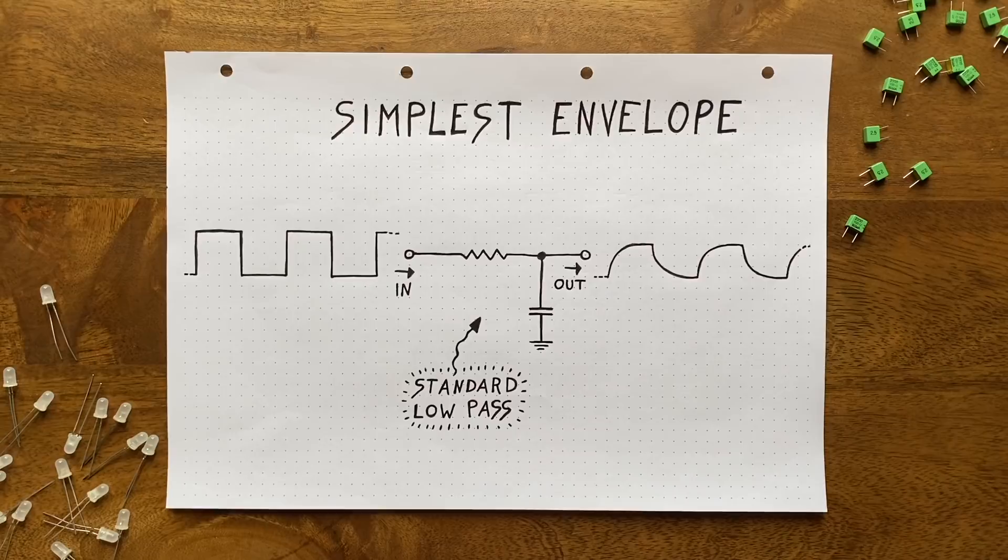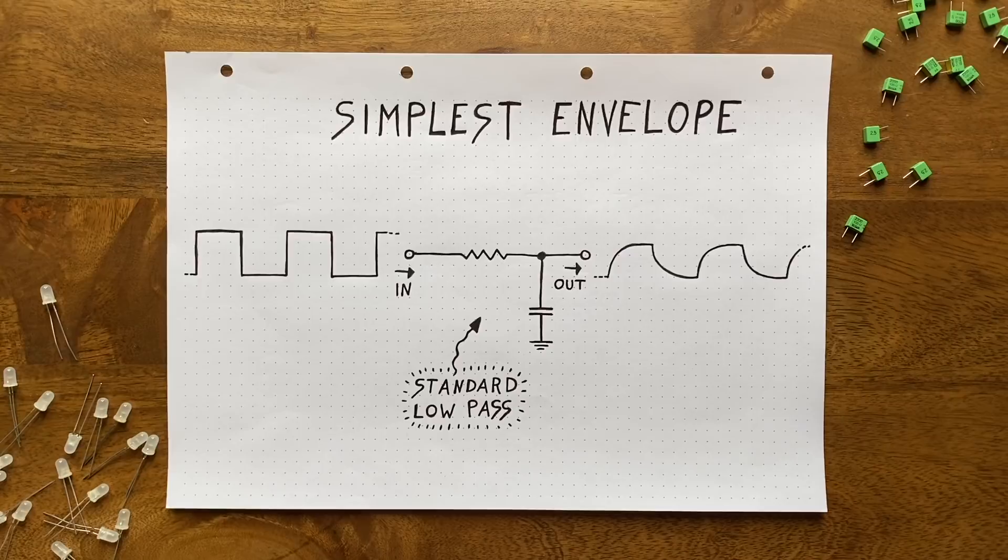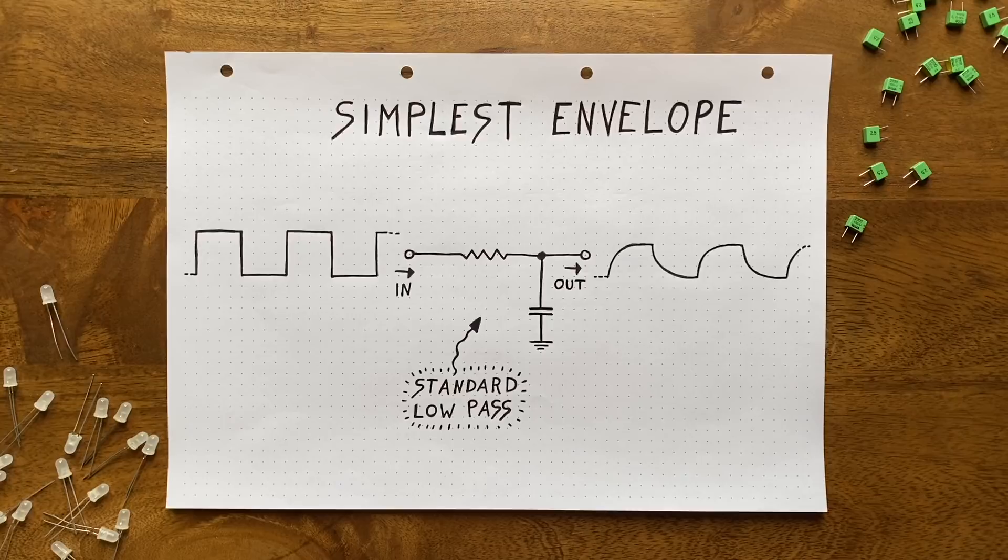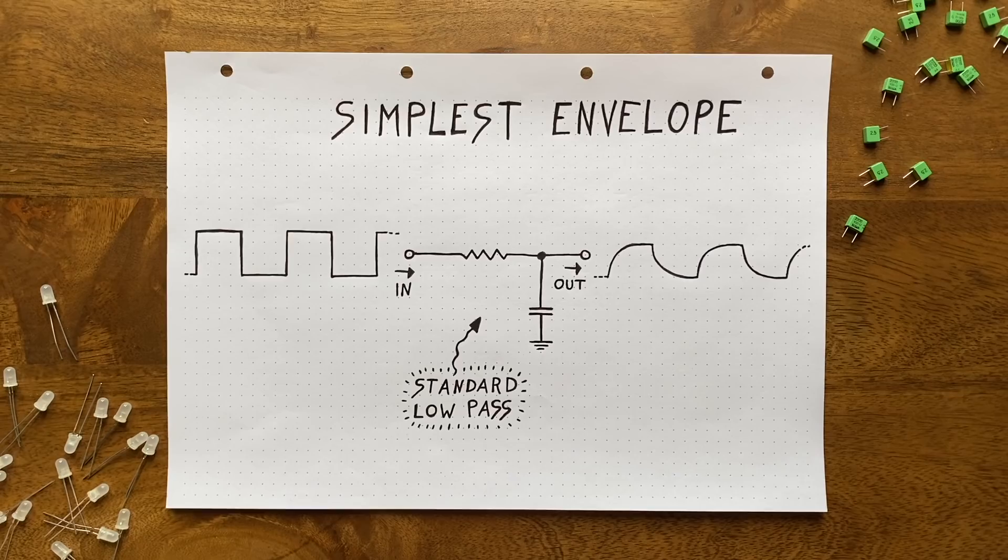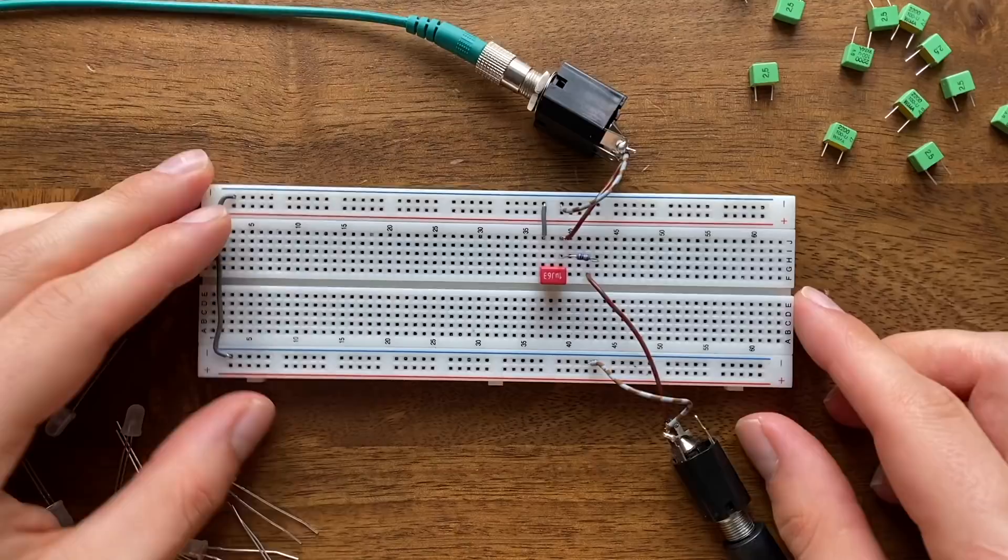But before we try this, we'll have to think about the appropriate values for the capacitor and resistor. Now since we're dealing with a very, very slow square wave oscillation at the input, they'll need to be pretty big. Otherwise the effect will be so minimal that we won't be able to tell the difference. In my experiments, a 100k resistor coupled with a one microfarad capacitor gave me some decent results. So I'll set this up on my breadboard, sending the input square in here and then connecting this side to my filter's CV input. Let's see how it sounds.